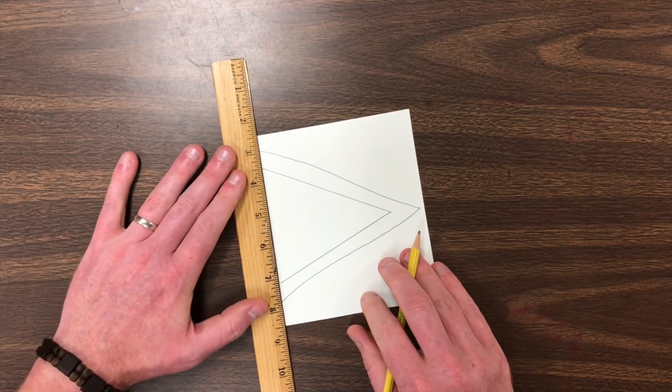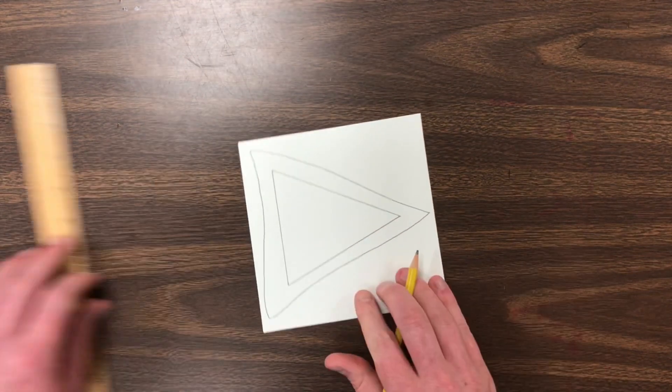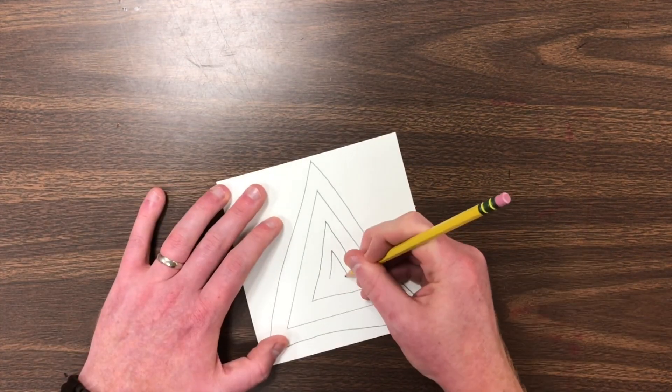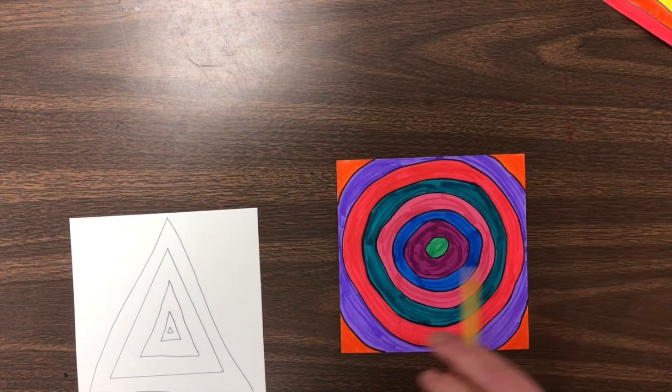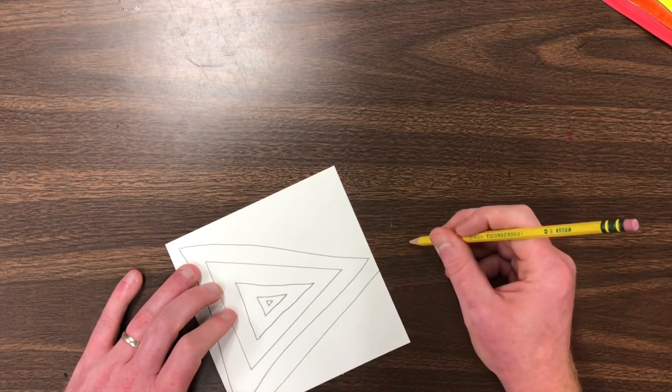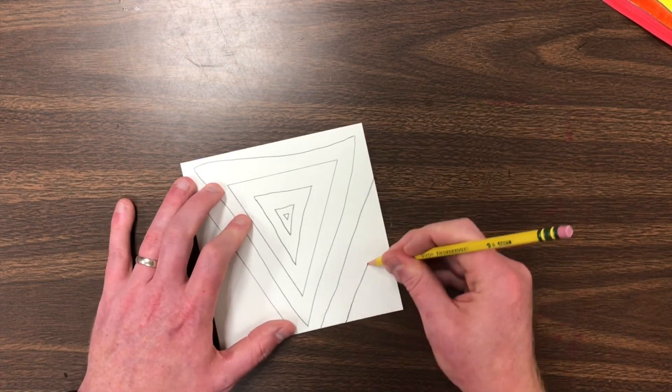Remember, you can use a ruler if you want it to be straight or not. Just like on my circle, I have a lot of empty space. So I'm going to continue my triangles going off the paper.